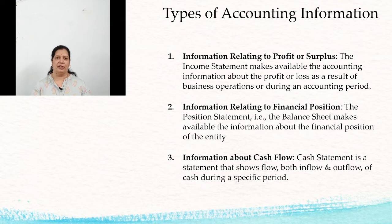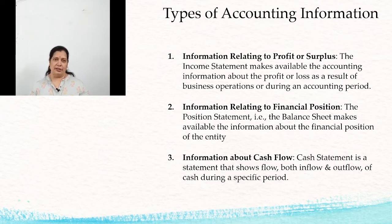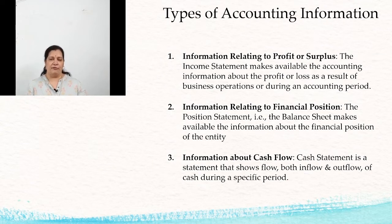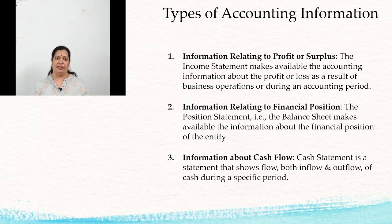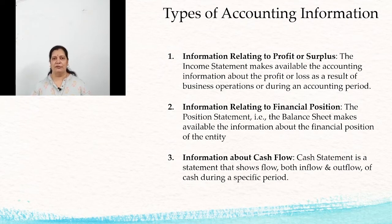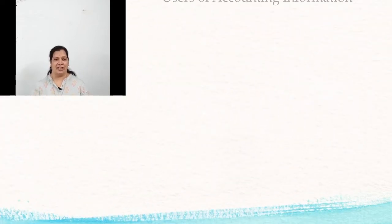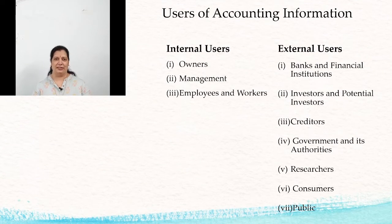There are three types of accounting information. First is information regarding the profit or surplus. Second is information regarding the positional statement, meaning the position of assets and liabilities. Third is information regarding cash flow — that is, the inflow and outflow of cash in the business, how much cash is coming in and how much cash is going out.